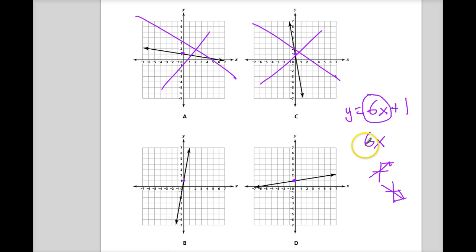Now I have to think, what's 6x mean? Well, 6 as a fraction is just 6 over 1. So that means it's going up 6 because it's positive and right 1. So I'm going to start here and go up 6. 1, 2, 3, 4, 5, 6 and over 1. And there should be a dot there, and there is.